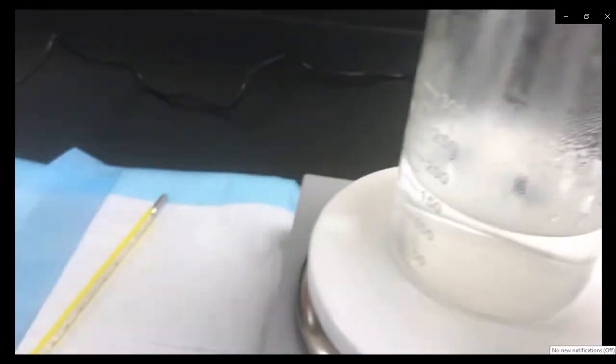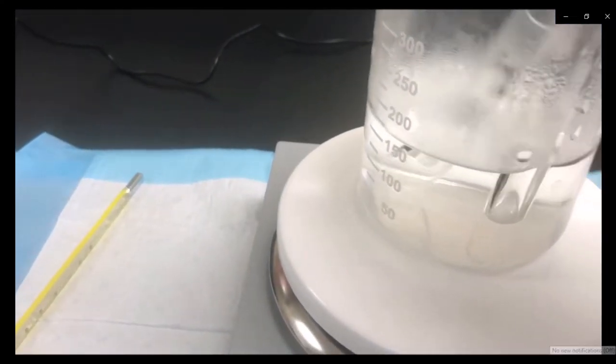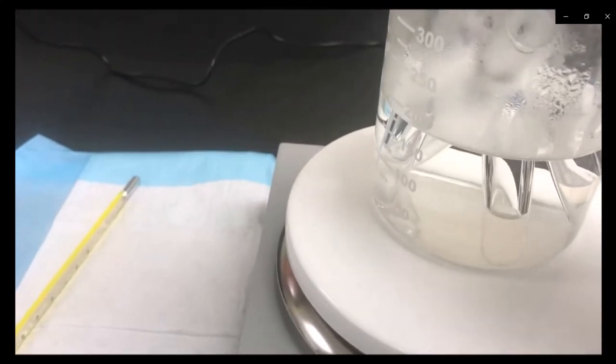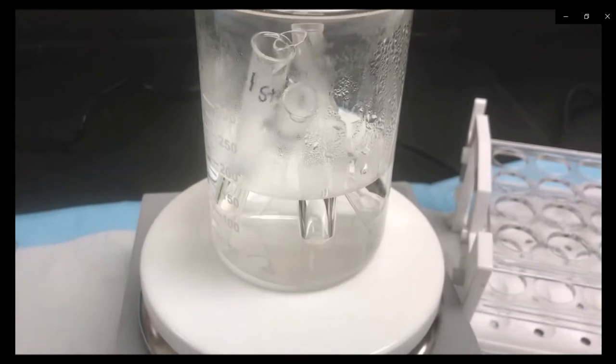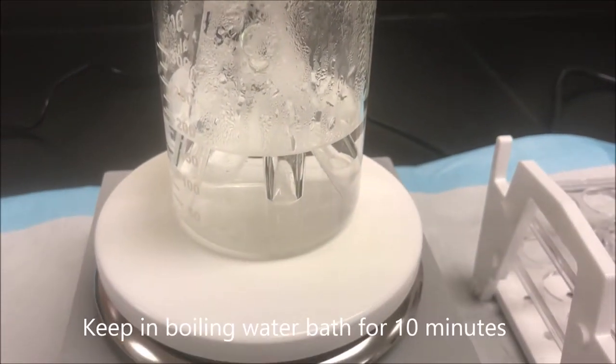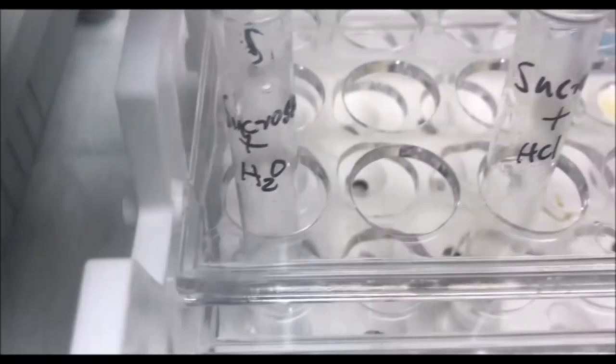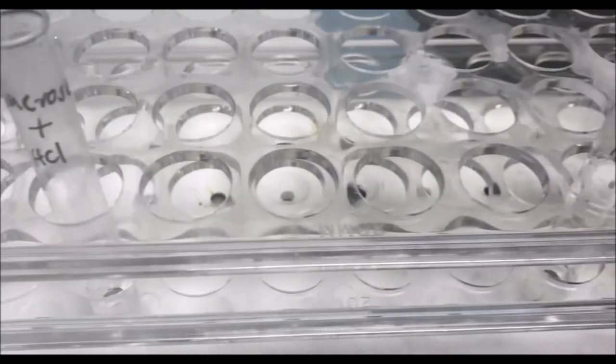Heat the samples in a boiling water bath for 10 minutes to initiate the hydrolysis. Remove the test tubes from the water bath and let it cool.